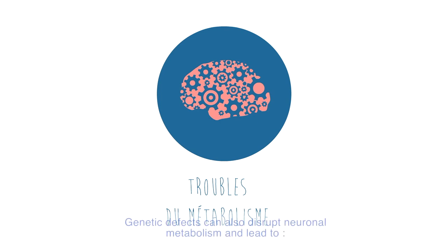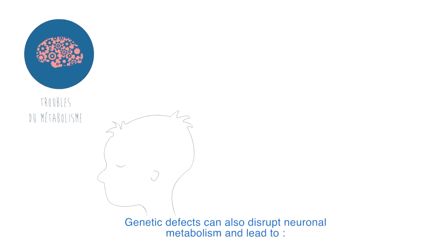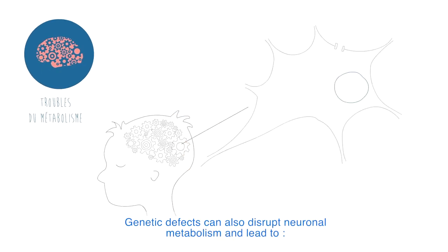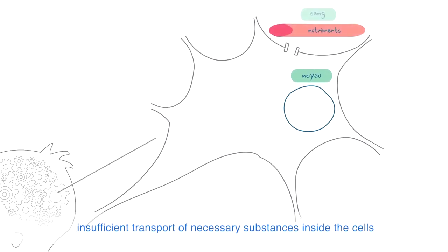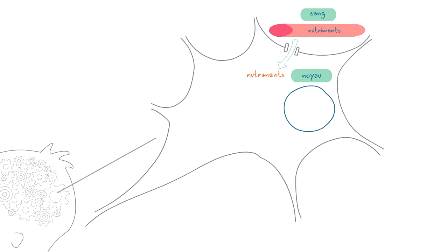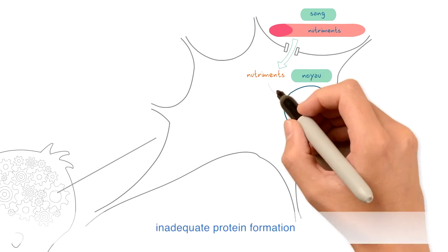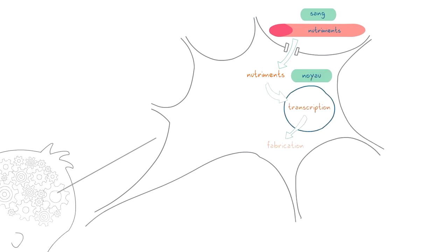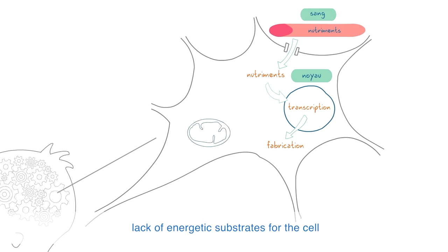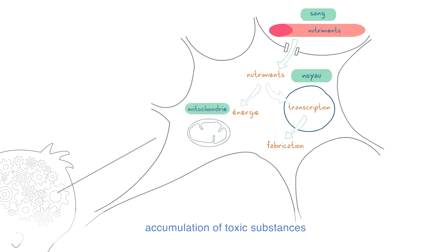Genetic defects can also disrupt neuronal metabolism and lead to insufficient transport of necessary substances inside the cells, inadequate protein formation, lack of energetic substrates for the cell, and accumulation of toxic substances.